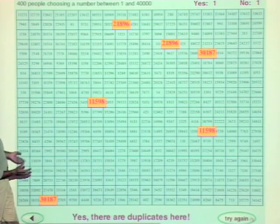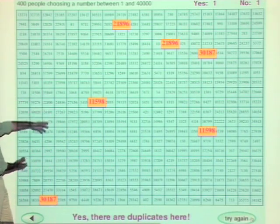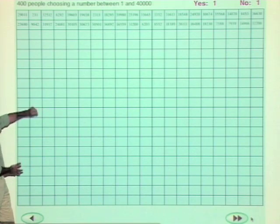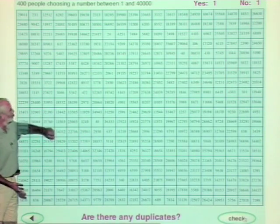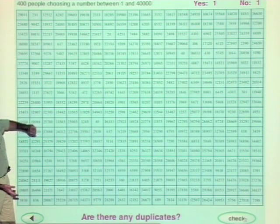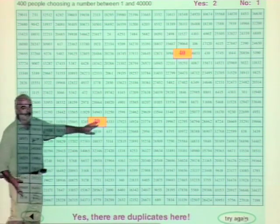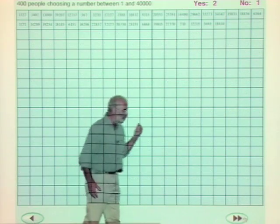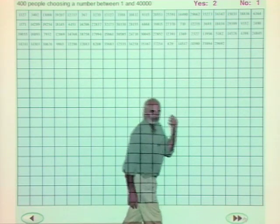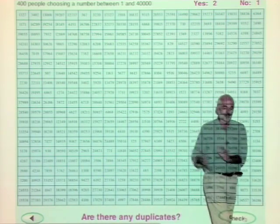Let's try it again — yes! Look, three lots of duplicates. Let's try it again: yes, two of them chose 40. So again, it doesn't always work, but seven out of eight times there will be a duplicate.